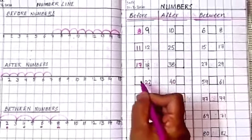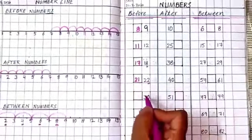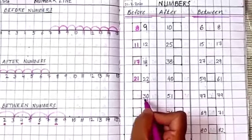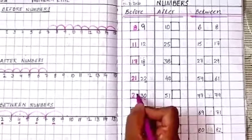We have to check the 1's place. Before 2, 1 is there. So 2, 1, 21 is your number. 30. Before 0, 9 will come. And before 3, 2 will come. So 29 is the before number.